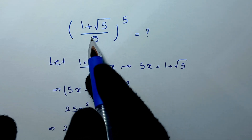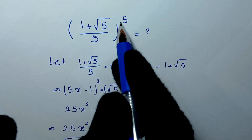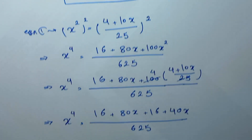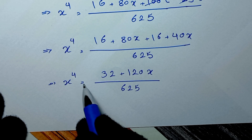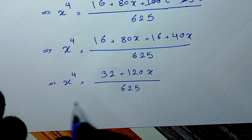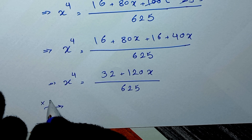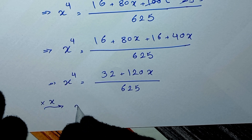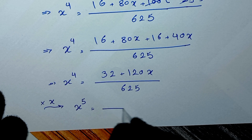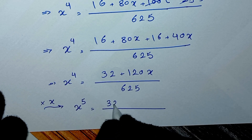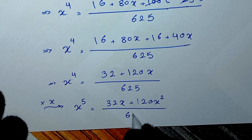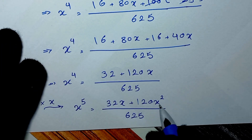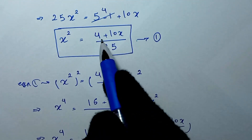From here, x to the power of 4 equals 16 plus 16 which is 32, and 80x plus 40x which is 120x, all over 625. Now we want to find the value of 1 plus square root of 5 over 5 to the power of 5, so we multiply both sides of this equation by x. This gives x to the power of 5 equals 32x plus 120x squared, all over 625.